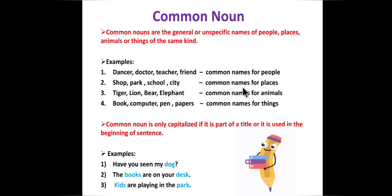Common names for places include shop, park, school, city. When we say 'shop,' it can be any shop — your nearby shop or a very famous shop in that area. But when we say 'shop,' we do not get any information about which specific shop we are talking about. It is used in general.